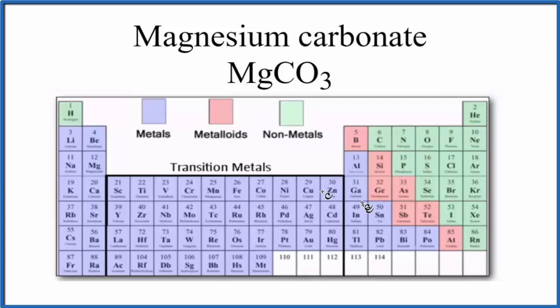So when we look at the periodic table, we can see that magnesium is right here, and that's a metal. So we have a metal for magnesium, carbon and oxygen are both nonmetals. So when we have a metal and nonmetals, that is an ionic compound.